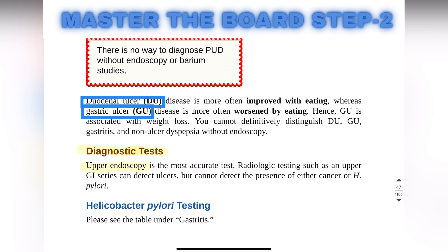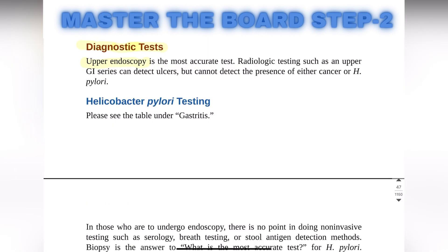The difference between a duodenal ulcer and a gastric ulcer: a duodenal ulcer is improved with eating, while a gastric ulcer is worsened by eating — hence the gastric ulcer is associated with weight loss. For diagnostic tests, upper endoscopy is the most accurate test for diagnosis of peptic ulcer disease.